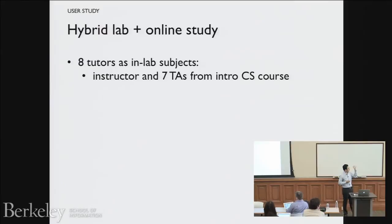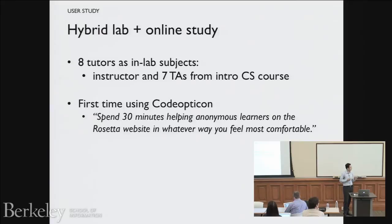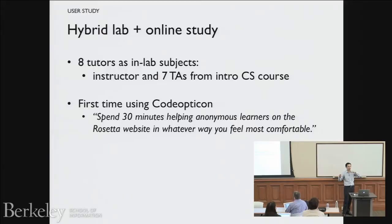These were the entire staff from the intro CS Python course at my school — people doing lab hours, including the instructor and seven TAs. This was their first time using the system. The prompt was: spend 30 minutes helping these anonymous learners on the Rosetta website in whatever way you feel most comfortable. I wanted to see naturalistic usage, with no reward for tutoring a specific number of people — just pretend you're in a lab and do whatever you'd normally do.